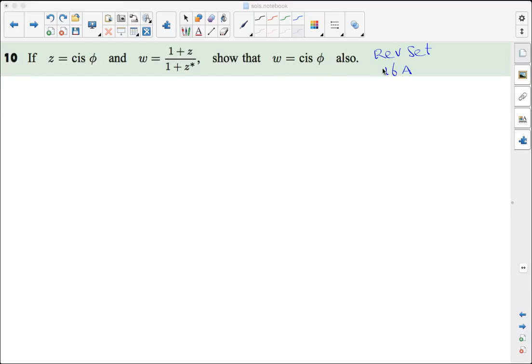Number 10 of review set 16A. First notice that they've changed our angle - it used to be theta, but this is the letter phi, capital phi. If Z is cis(φ) and W equals (1 + Z) over (1 + conjugate of Z), show that W is also cis(φ).